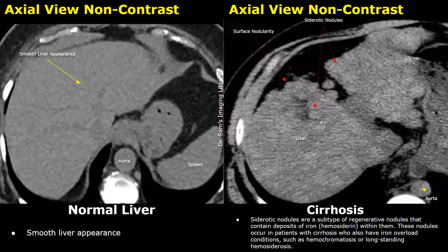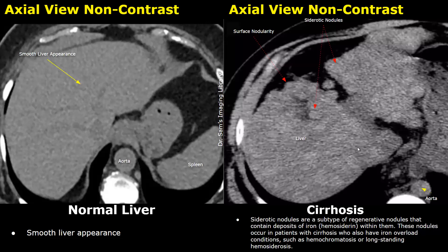Siderotic nodules are a subtype of regenerative nodules that contain deposits of iron and hemosiderin. These nodules occur in patients with cirrhosis who also have iron overload conditions such as hemochromatosis or long-standing hemosiderosis. Siderotic nodules appear more hyperdense compared to other regenerative nodules due to iron deposition. This is a non-contrast CT image and you can see many round hyperdense structures — these are siderotic nodules. Surface nodularity is also present and the liver appears somewhat reduced in size.